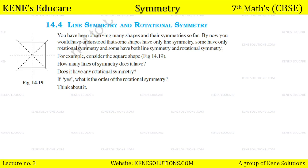Consider the square shape shown in the diagram. How many lines of symmetry does it have? There are 4 lines of symmetry — 1, 2, 3, and 4. Does it have rotational symmetry? Yes, it also has rotational symmetry. What is the order of rotational symmetry? There are 4 orders of symmetry. We have already seen how the square has order 4.